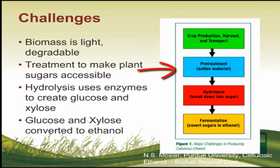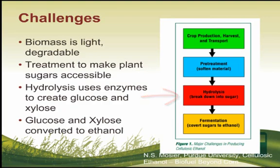Pre-treatment can include things like steam explosion, acid treatment, or ammonia fiber expansion to make the sugars within the plant cells available to microbes. Hydrolysis uses enzymes to turn cellulose into glucose and xylose. Specific strains of these enzymes are being developed for this use today. Fermentation is well developed for some sugars, including glucose, but is more specialized for xylose. This causes challenges with the yield of ethanol per ton of plant biomass feedstock.